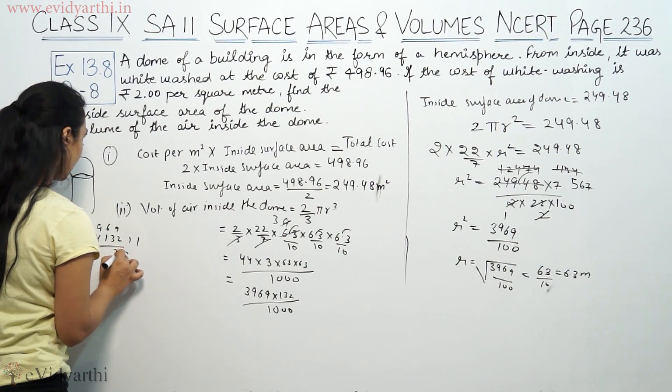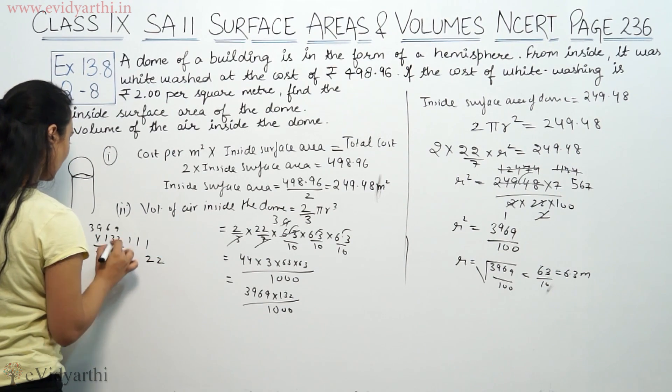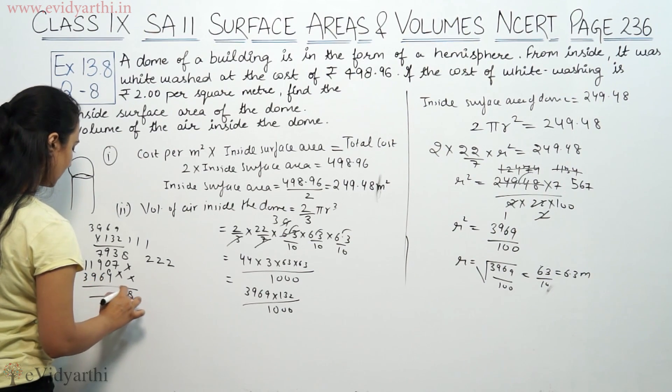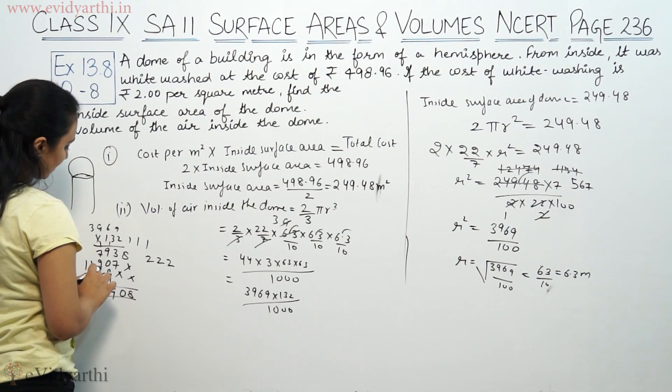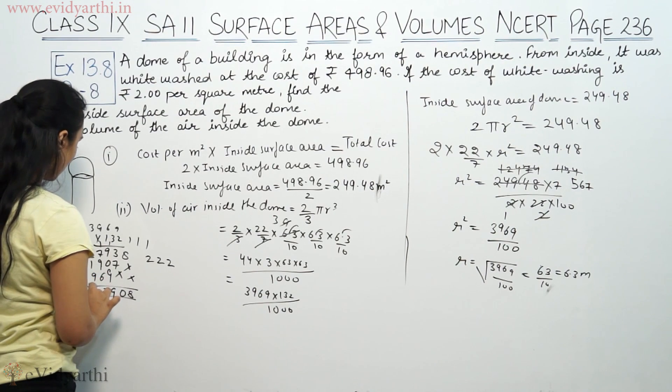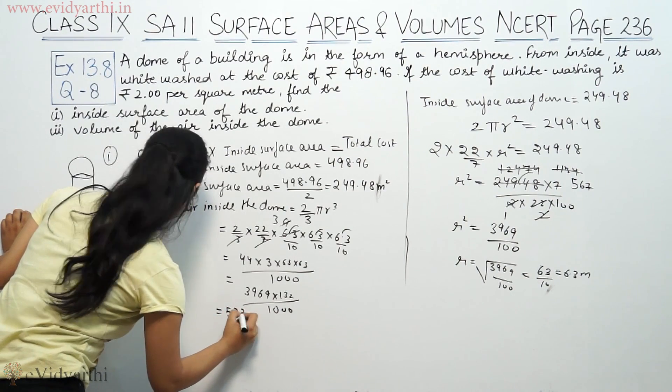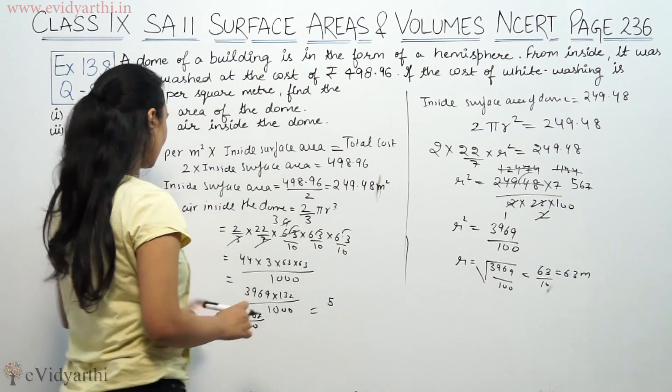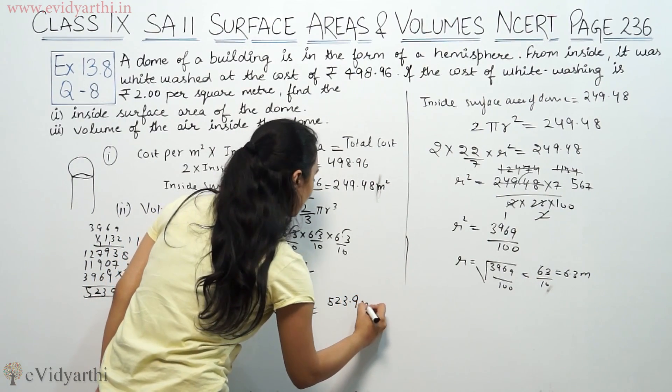So 3969 × 132 equals... calculating step by step... this gives us 523908/1000, which equals 523.9 meter cube. This is the answer.